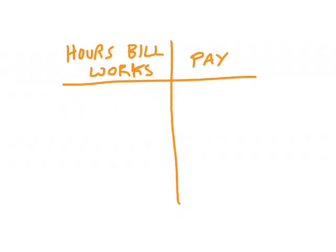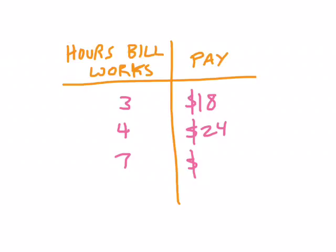Imagine, as a simple example, that we've got a guy named Bill working. It doesn't really matter what job he works, but let's say that when he worked three hours he made $18, when he worked four hours he made $24, and when he worked seven hours he made $42. We can take this pattern of hours worked and money made and describe it using a variable expression.